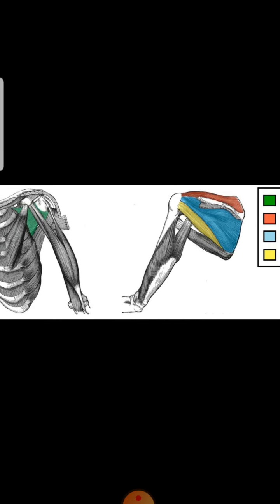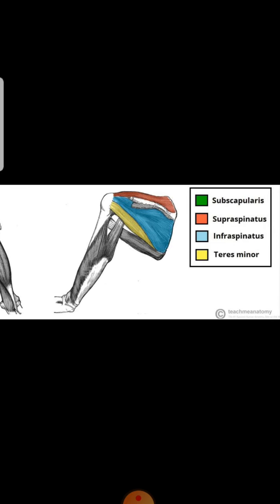Now we will talk about the rotator cuff muscles, a very important group of muscles. This group is composed of four muscles: subscapularis, supraspinatus, infraspinatus, and teres minor. To remember this muscle group you can use the mnemonic SITS — S for subscapularis, I for infraspinatus, T for teres minor, and S for supraspinatus.